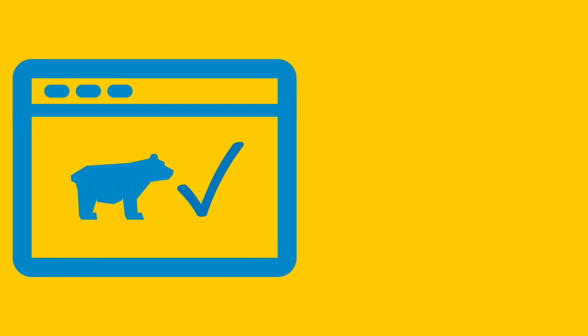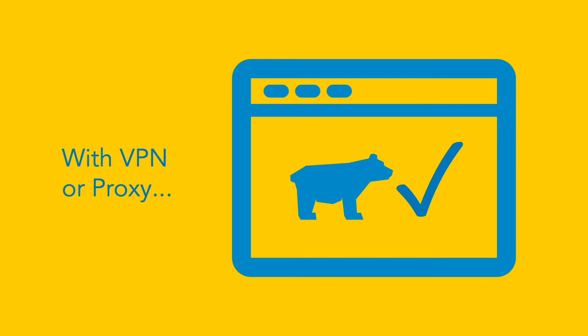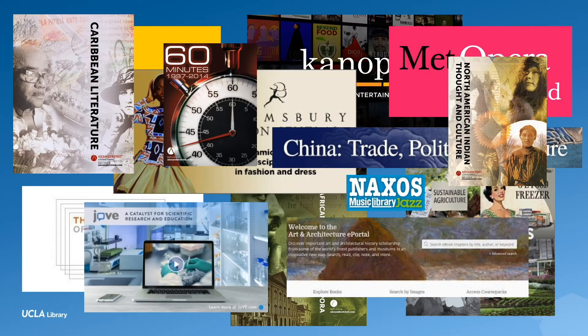To see if you can get that book or article for free, you can set up your computer with a VPN or a proxy. This gives you a chance to type in your UCLA logon ID and show the internet that you are a Bruin. Once you're set up, you'll have access to millions of resources licensed by the library, including ebooks, articles, videos, music, and all other sorts of things. I chose a VPN because I like the security it provides and the control it gives me as a user to manually enable or disable it when I'm browsing online. Just a preference.